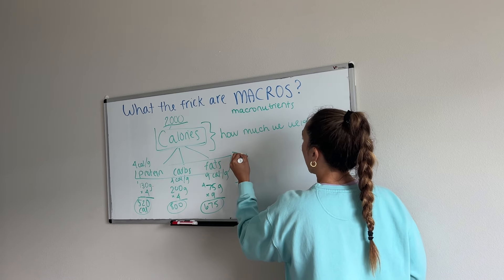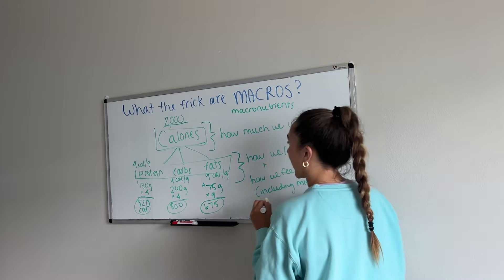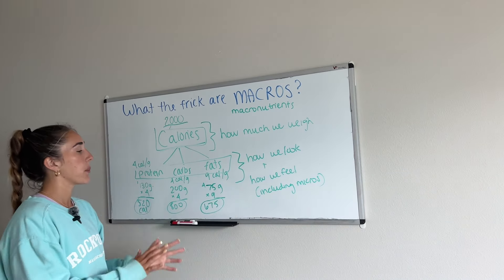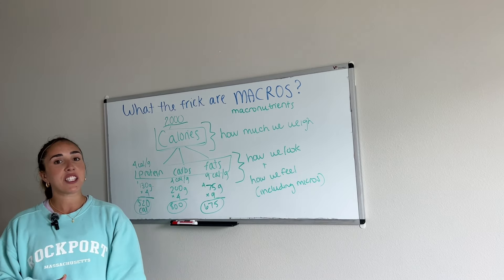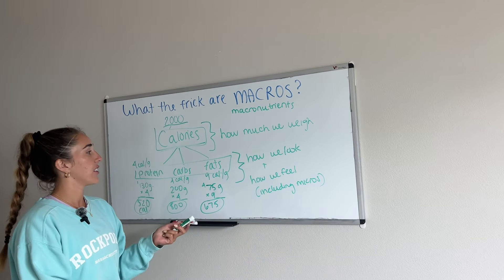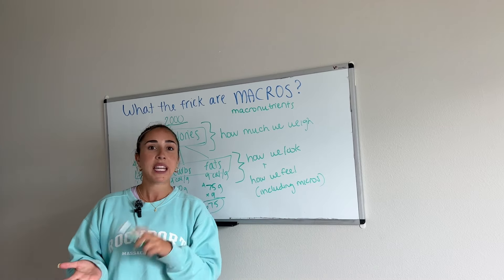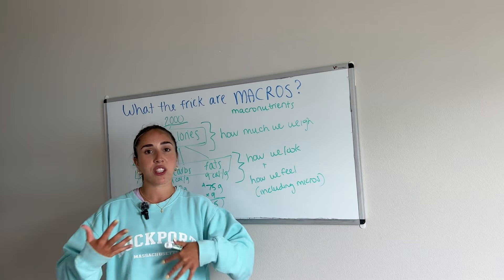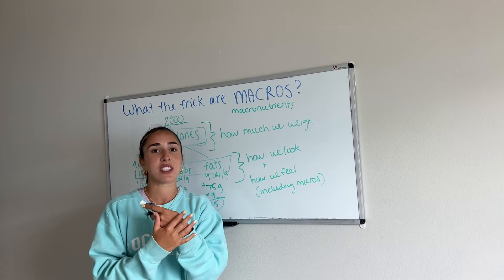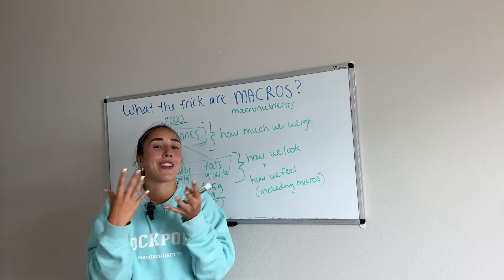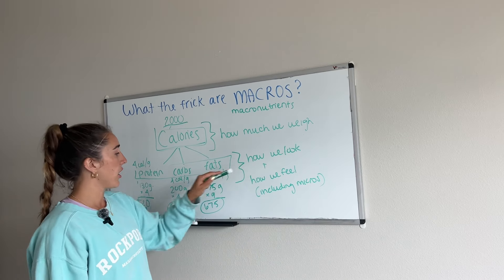This will determine how we look and how we feel — including micros. We're adding another thing into the mix with micros. With protein, carbs, and fats: proteins include chicken, steak, Greek yogurt, eggs, egg whites. Carbs are potatoes, veggies, or fruits — a lot of people don't know that veggies and fruits are carbs, but they are. Fats are like nuts, avocado, peanut butter. Each food also has micros — a banana is high in potassium, a clementine is high in vitamin C. That's why I preach whole foods: ingredients that are only one ingredient, like a clementine, versus a protein bar with a bunch of other stuff in it. So: calories — how much we weigh. Macros — how we look. Micros — how we feel.